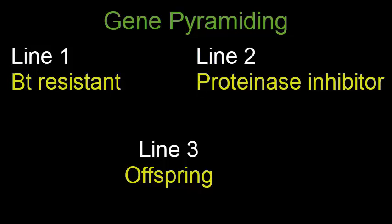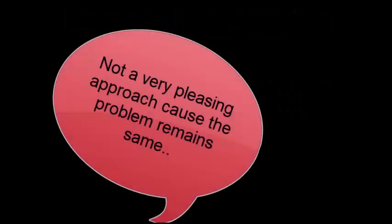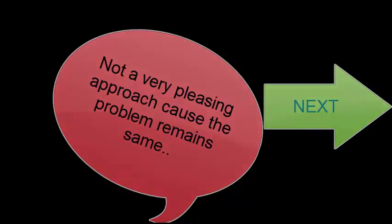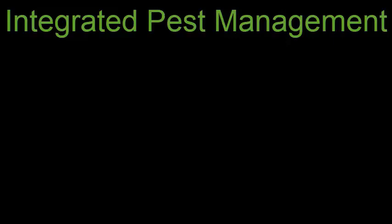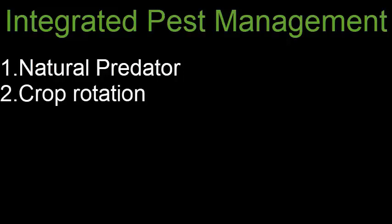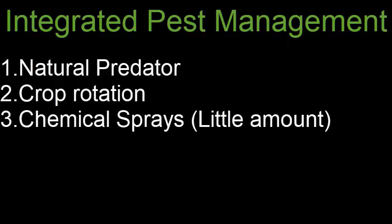Another approach considered was domain engineering to produce chimeric proteins. The next highly effective approach is IPM — Integrated Pest Management. This involves integrating a natural predator, using different or adjacent plant species, applying crop rotation and protection, and using a bit of chemical sprays. This is a very effective technique still used in the current scenario.